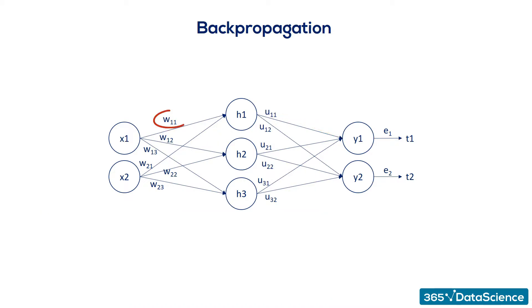Now, let's examine W11. W11 helped us predict H1. But then, we needed H1 to calculate Y1 and Y2. Thus, it played a role in determining both errors, E1 and E2. So, while U11 contributes to a single error, W11 contributes to both errors. Therefore, its adjustment rule must be different.